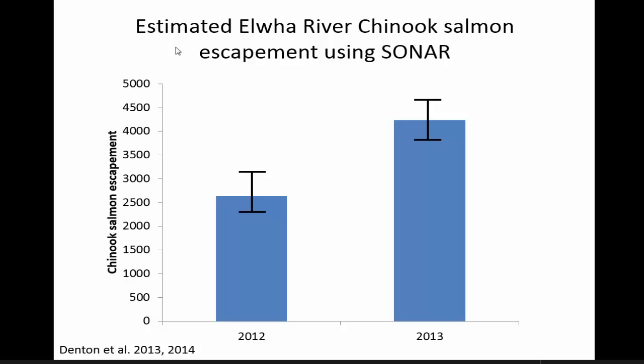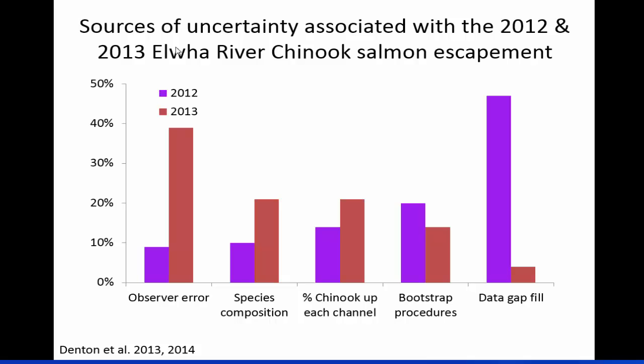Having error bars around these estimates is really important because we can figure out what that uncertainty is due to, and it varies by year. In 2012, we had higher flows and had to pull the sonar multiple times to prevent it from getting torn out, resulting in a lot of data gaps. In 2013, we didn't have flow issues, but we lost some funding and a very good observer, so observer error went up. These are real-life scenarios where people want to know how many fish there are, but getting that number varies each year. We can actually get better over time at measuring things if we understand where error is occurring.